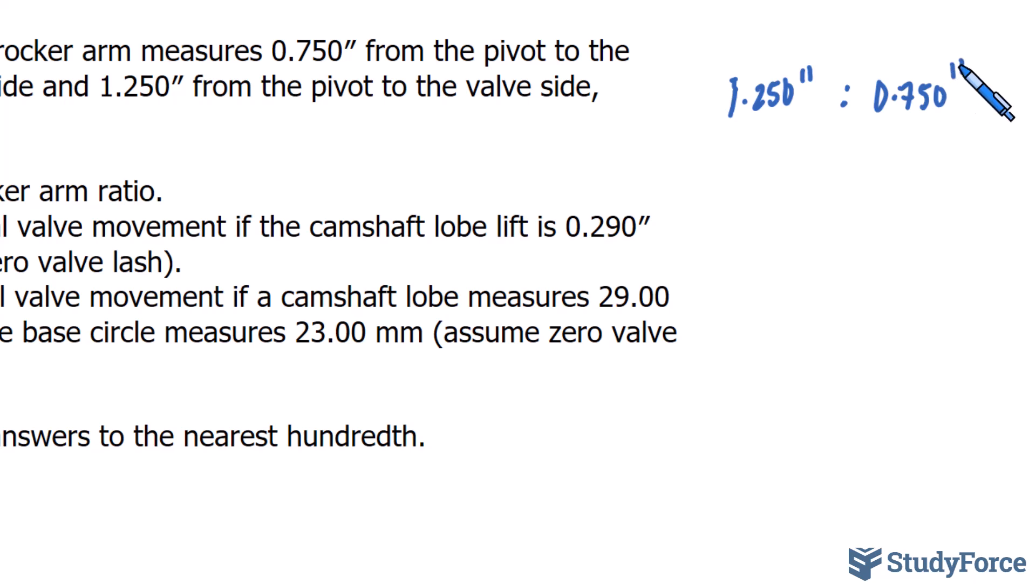You're more than welcome to write this as a fraction instead. From here, we want to convert this ratio into a unit ratio, whereby the camshaft side, in particular 0.750, becomes a 1. And we can do that by dividing both sides by the value itself.